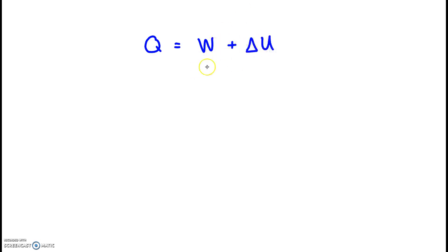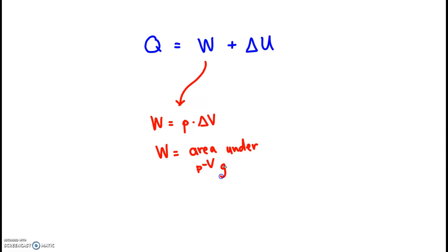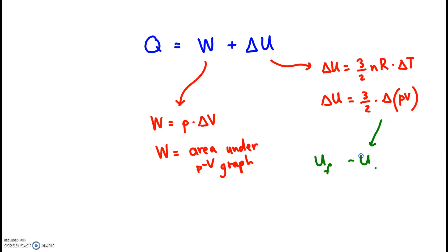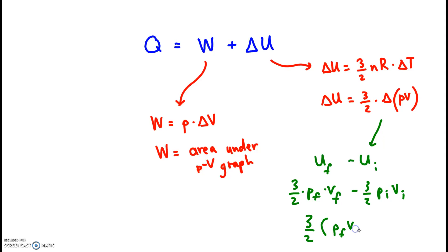The important thing is this was a chance to practice two crucial equations. Work can be acquired using fixed pressure times the change in volume, or from the area under the PV graph. Delta u can be acquired using 3 halves nR times the change in temperature, or 3 halves times the change in the product of pressure times volume — that is, u final is 3 halves times final P times final V, minus 3 halves times initial P times initial V, or you can factor out the 3 halves.